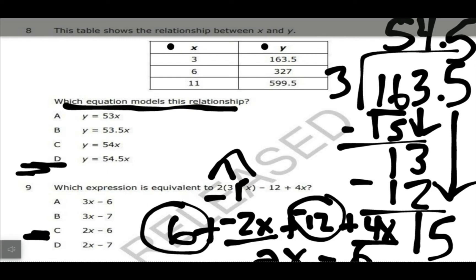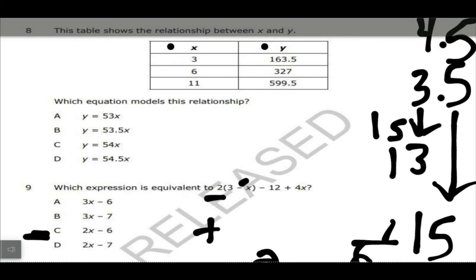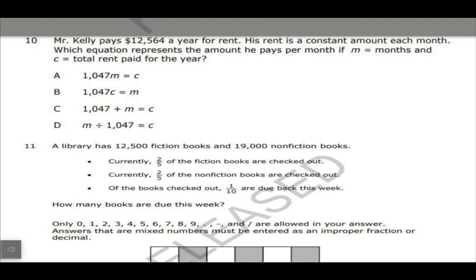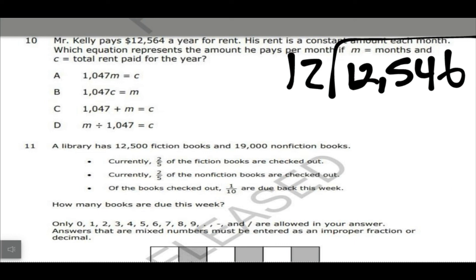And then we do have two on the next page, but I'm just going to do the top one since I wanted to do 6 through 10. So last one for number 10. It says Mr. Kelly pays $12,564 a year for rent. His rent is a constant amount. Remember with constant, that's Y divided by X again. So it says which equation represents the amount he pays per month in M equals months and C equals total rent. So if you think about there are 12 months in a year, so we want to divide this by 12.